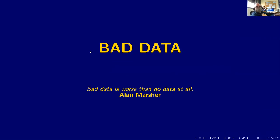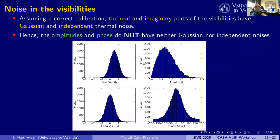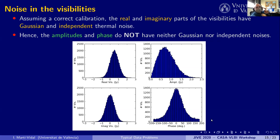This brings us to the next kind of problems: bad data. Bad data is worse than no data at all. By bad data I mean data that are too noisy to be used in self-calibration. If the calibration is correct, the real and imaginary parts of the visibilities have uncorrelated Gaussian noise. But translating to amplitude and phase, the noise is no longer Gaussian and you have correlations. Self-calibration works in amplitude and phase space where these correlations can cause a lot of trouble.